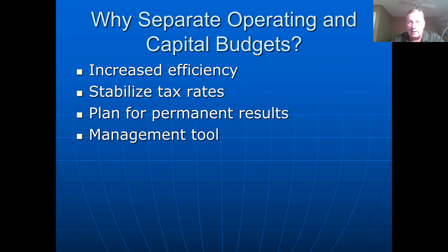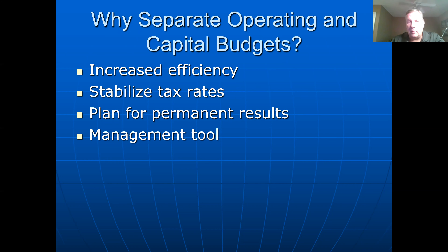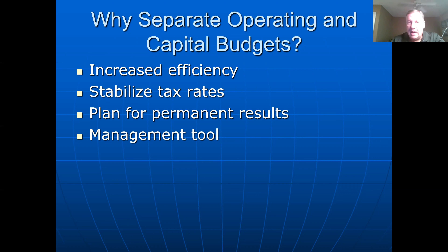If you think about a structure that's going to cost $80 million, raising that all in one year from tax increases would be cost-prohibitive for your residents. So what we do with these capital projects is typically issue debt to pay for them. The $80 million in bond proceeds comes in, we construct the project, and then repay it over a 20, 30, or maybe 40-year maturity schedule. This stabilizes tax rates with smaller incremental increases spread over time.